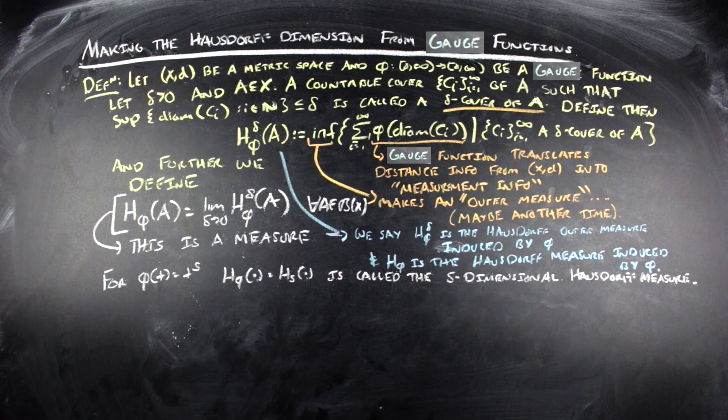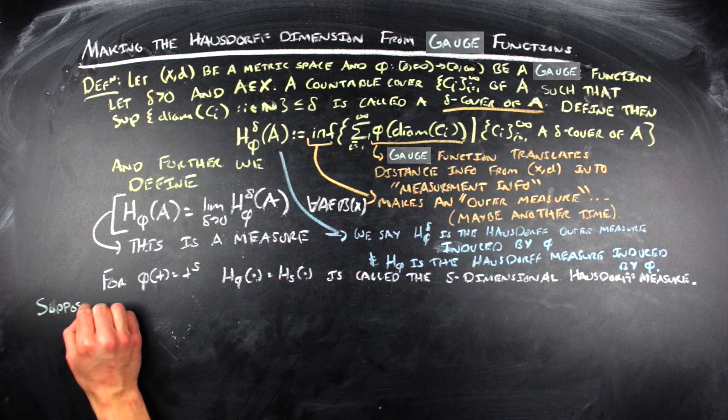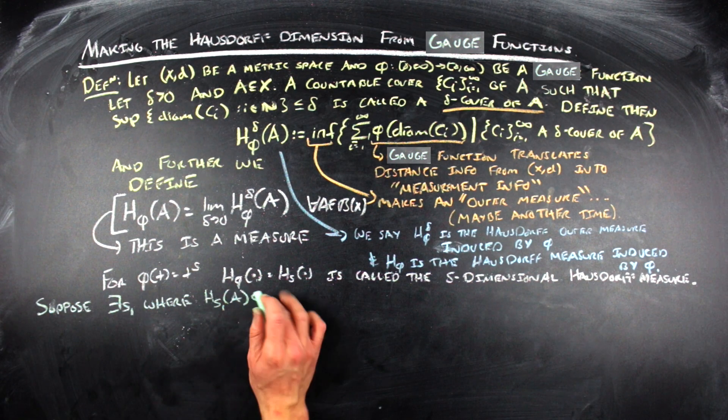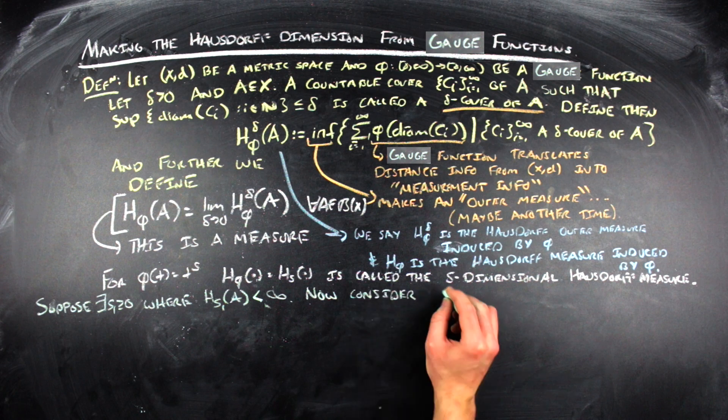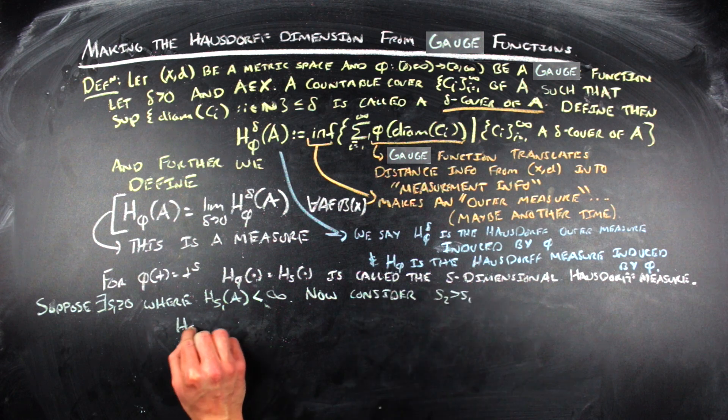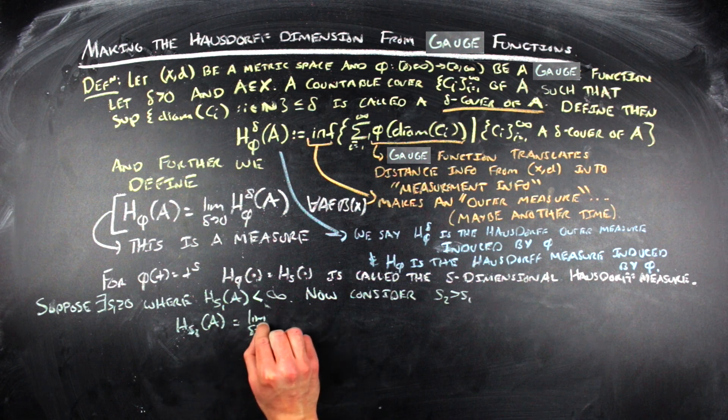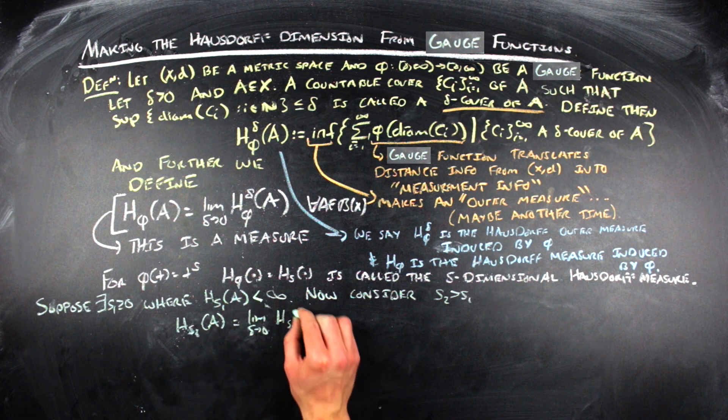Taking this limit as δ→0, this is what makes a measure in the measure theoretic sense. And we call this the Hausdorff measure induced by φ, and we call the h_{φ}^δ thing the Hausdorff outer measure induced by φ. Now for these special gauge functions, the ones that are φ(t) = t^s, we're going to define h_{t^s} to be equal to just h_s, and that is going to be called the s-dimensional Hausdorff measure. And so now we have this thing that I've said is the Hausdorff measure, and I want to somehow communicate that it is the thing that is appropriate and will give us the Hausdorff dimension, or this notion of dimension that we've been intuitively talking about for this video.